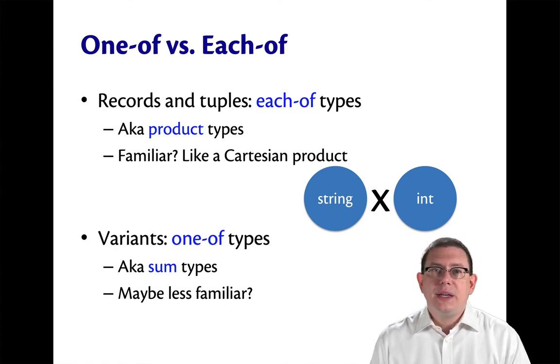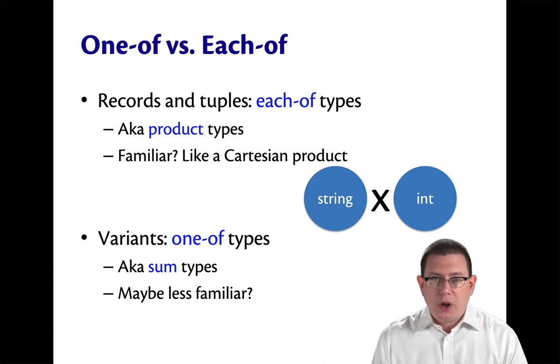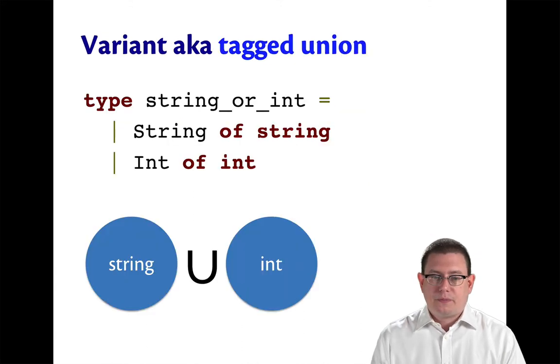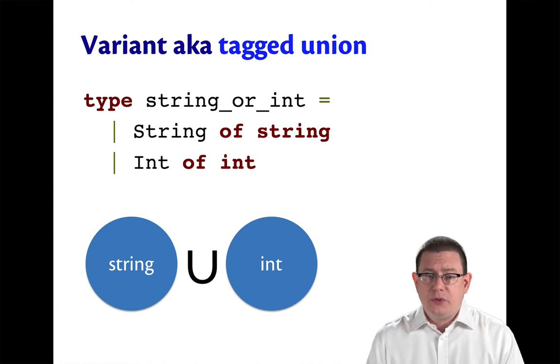Sometimes these are called sum types. Now, the reason why mathematically they're called sum types is maybe less familiar than Cartesian products. The notion is that we are taking the union of two sets. Whereas with Cartesian product, we were taking the product of two sets.